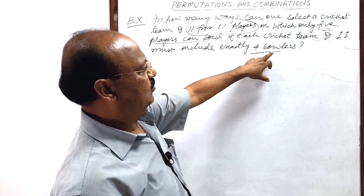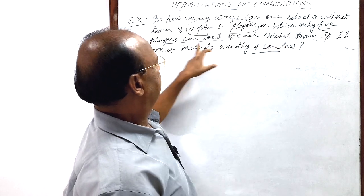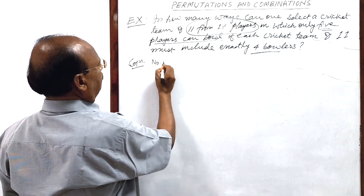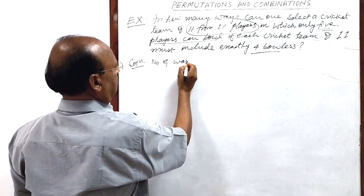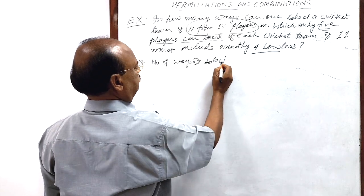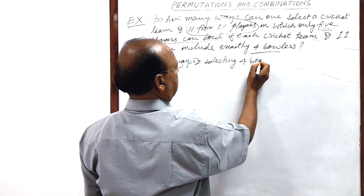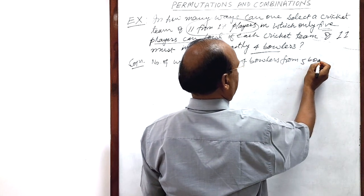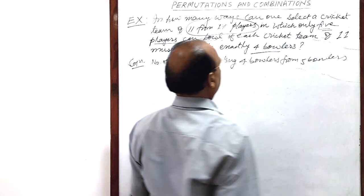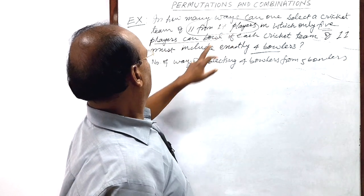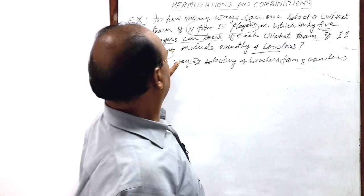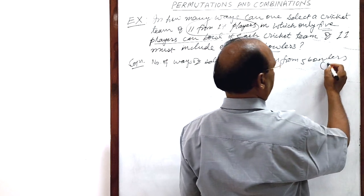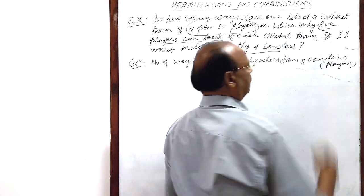So first of all, let us select 4 bowlers out of 5 bowlers. Number of ways of selecting 4 bowlers from 5 bowlers, because in this group of 17, there are 5 players who can bowl. Here bowlers means players, 5 players or 5 bowlers.